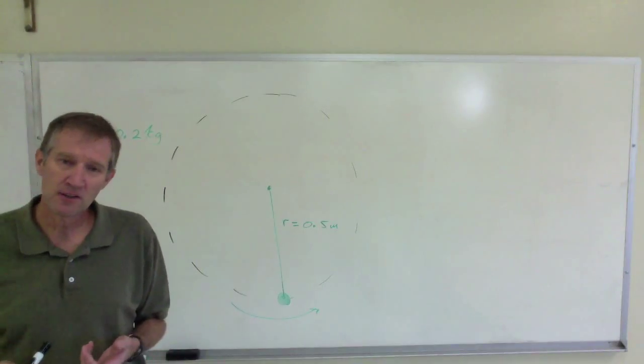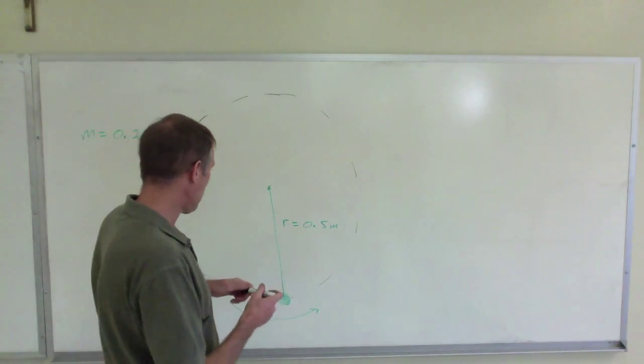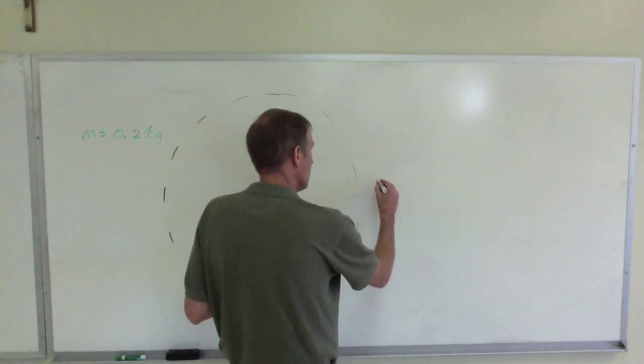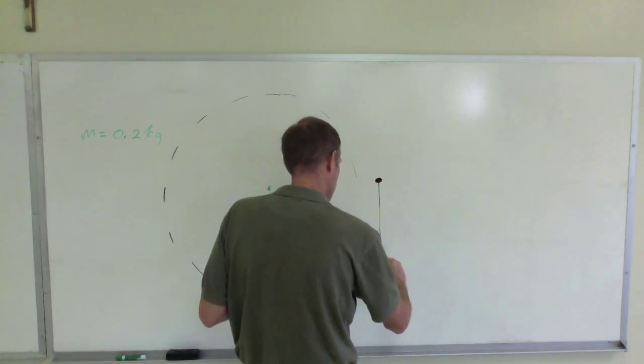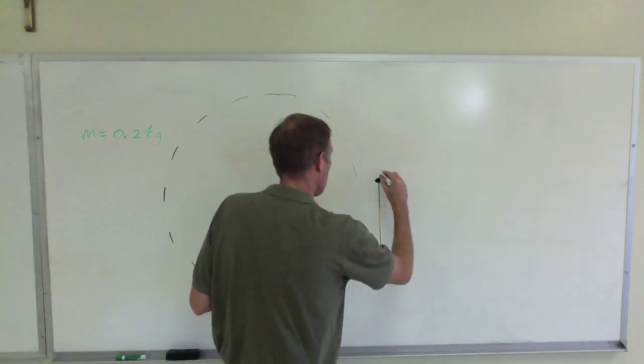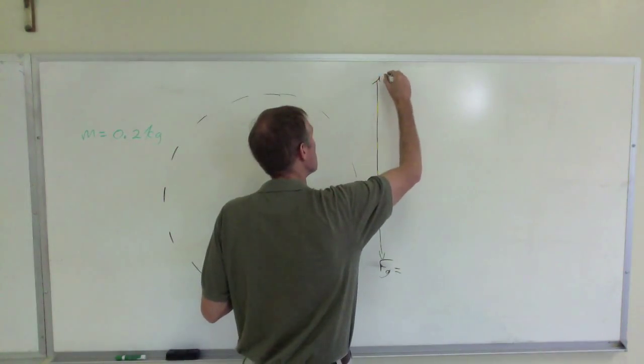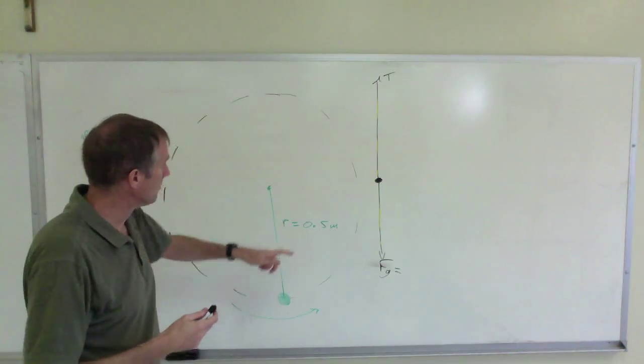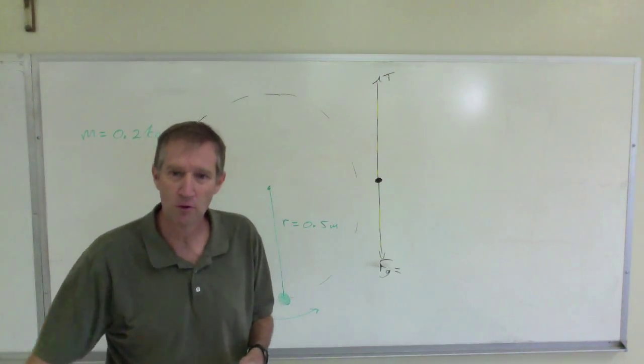And the goal is to find the tension in the string. So if you draw a force diagram on the ball, then you've got the weight of the ball down. I'm going to use Fg, the weight of the ball down. And then you've got the tension pointed up. Now the tension is going to be greater than the weight because the ball is going in a circle, so you have a centripetal force.